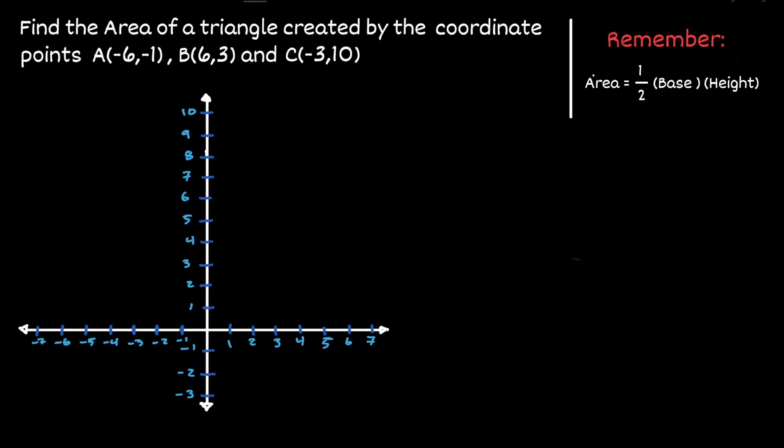For this example, we're going to consider a triangle where the three vertices are A(-6,-1), B(6,3), and C(-3,10).